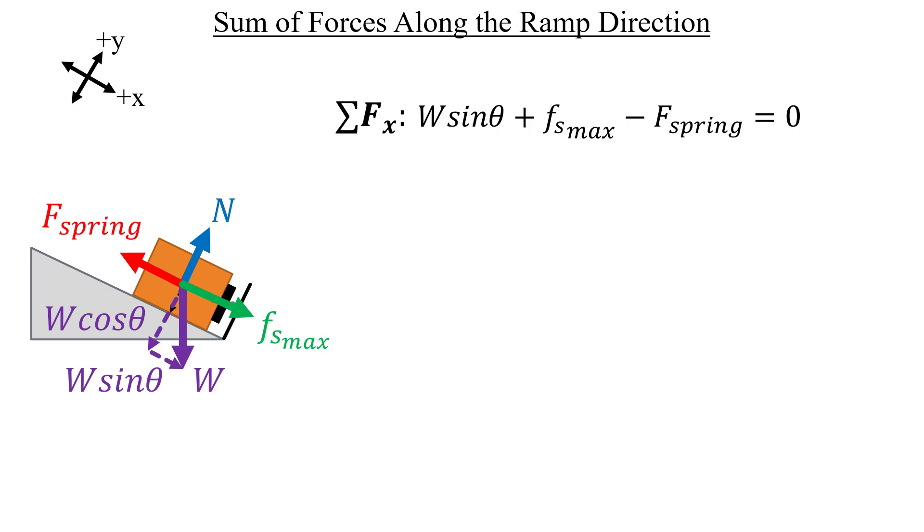On the left, we have the sine component of the crate's weight and the maximum static friction expression acting on the box, balancing out the resistance force of the spring.